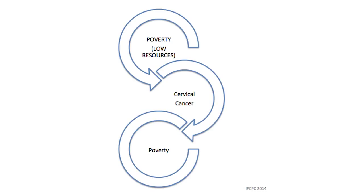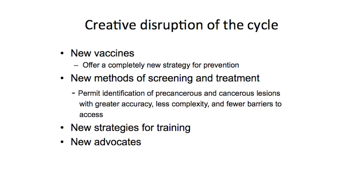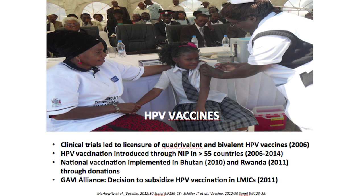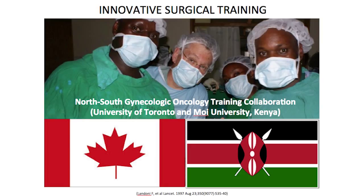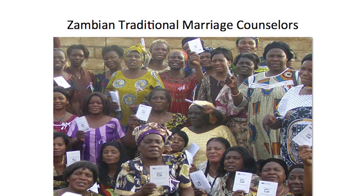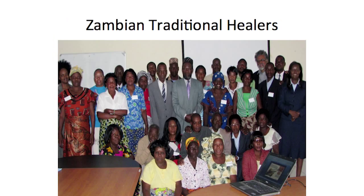Again, we have this cycle of low resources in these countries, which sets women up for cervical cancer — they can't get screened, can't get treated — which then leads to more poverty. So how can we creatively disrupt this cycle? New vaccines, which have already been talked about. We have new methods of screening and treatment, new strategies for training doctors to keep them inside these countries, and new advocates to deepen and broaden the spread of the message. This is the first young girl that was vaccinated in Zambia, and these are some of the new methods of cervical cancer screening. There's a group of gynecologic oncologists in Toronto now training doctors in Kenya.